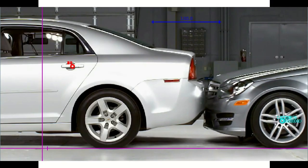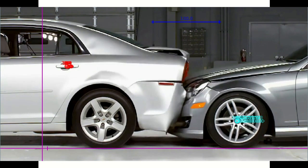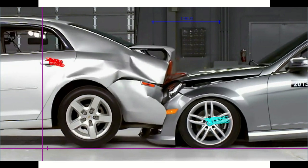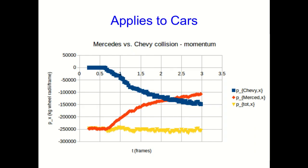Momentum seems to be conserved for all sorts of collisions between our carts. What about other objects — is this general or just specific to our carts? We can look at this collision between cars. I'm doing a more direct test by actually calculating the momentums of the two cars and calculating the total momentum. You can see that the total momentum, shown in yellow on the graph, is roughly constant through the collision. So again, momentum seems to be conserved in this collision between these two cars.